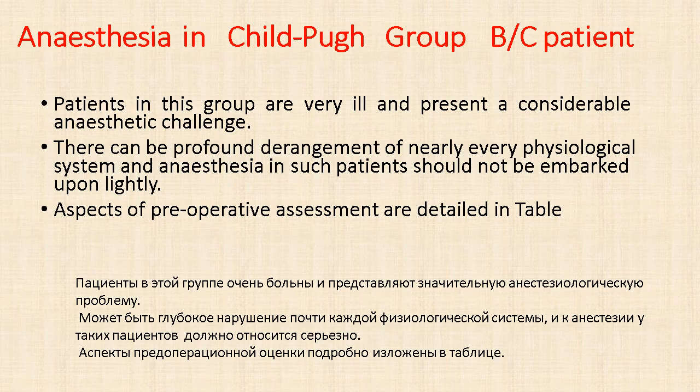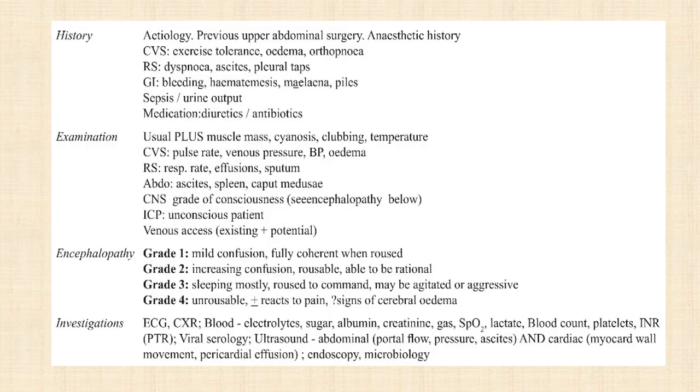Patients in Group B and C are very ill and present a considerable anesthetic challenge. There can be profound derangement of nearly every physiological system, and anesthesia in such patients should not be embarked upon lightly. Aspects of preoperative assessment include history, examination, encephalopathy and investigations.